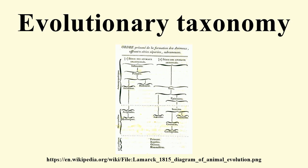Evolutionary taxonomy. Evolutionary systematics, or Darwinian classification, is a branch of biological classification that seeks to classify organisms using a combination of phylogenetic relationship, progenitive descendant relationship, and degree of evolutionary change. This type of taxonomy may consider whole taxa rather than single species, so that groups of species can be inferred as giving rise to new groups.